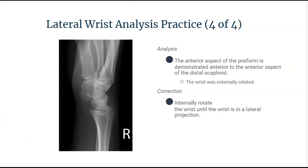Let's look at our last lateral wrist projection. The image looks lateral. However, the thumb is in appropriate positioning. But when you look at the relationship between the scaphoid and the pisiform, the pisiform is demonstrated anterior to the scaphoid. That's letting me know that the wrist was in external rotation. In order to correct this imaging error, we need to internally rotate the wrist until it is in a true lateral projection.